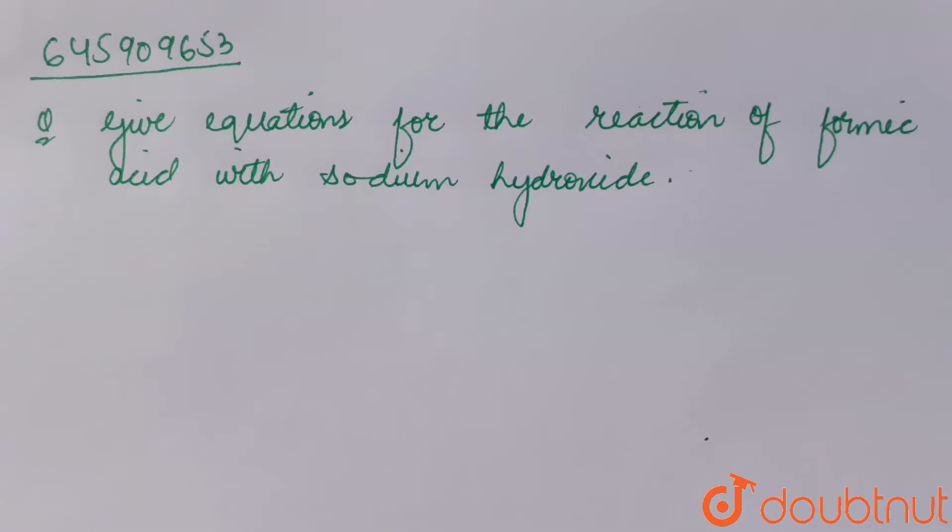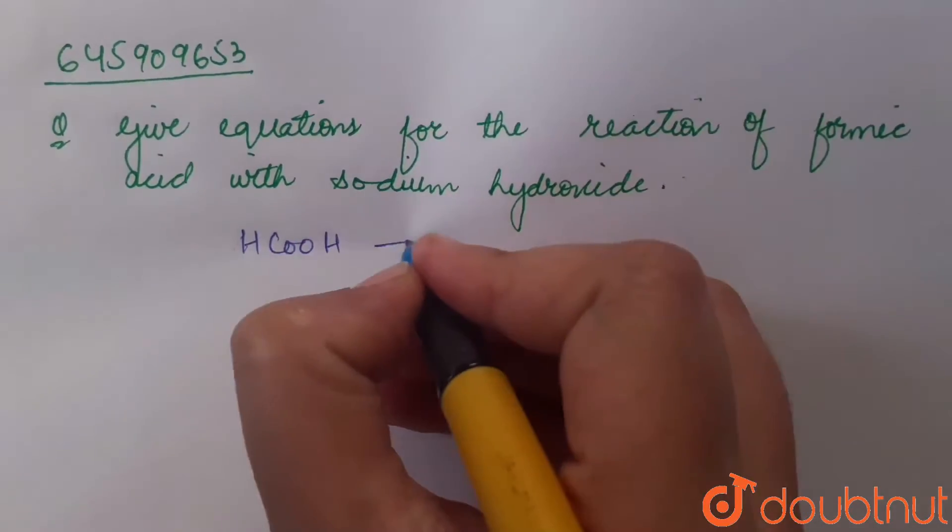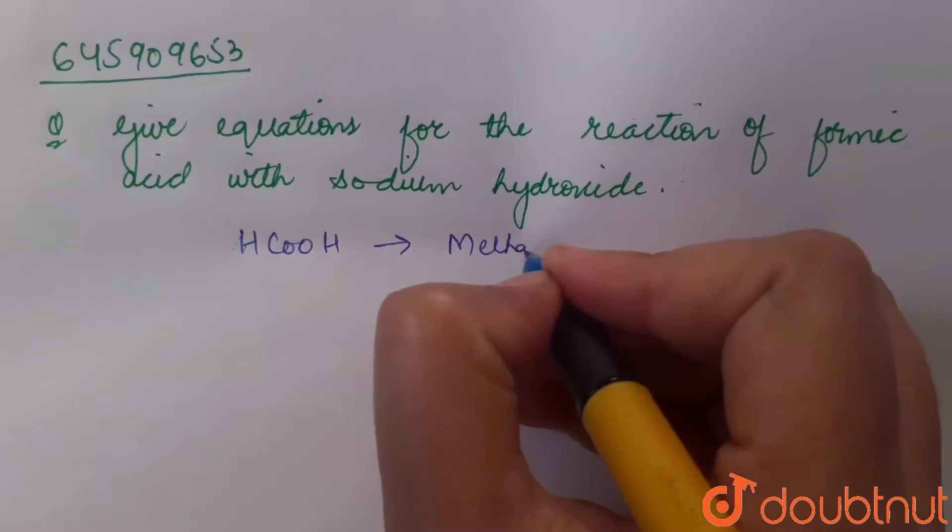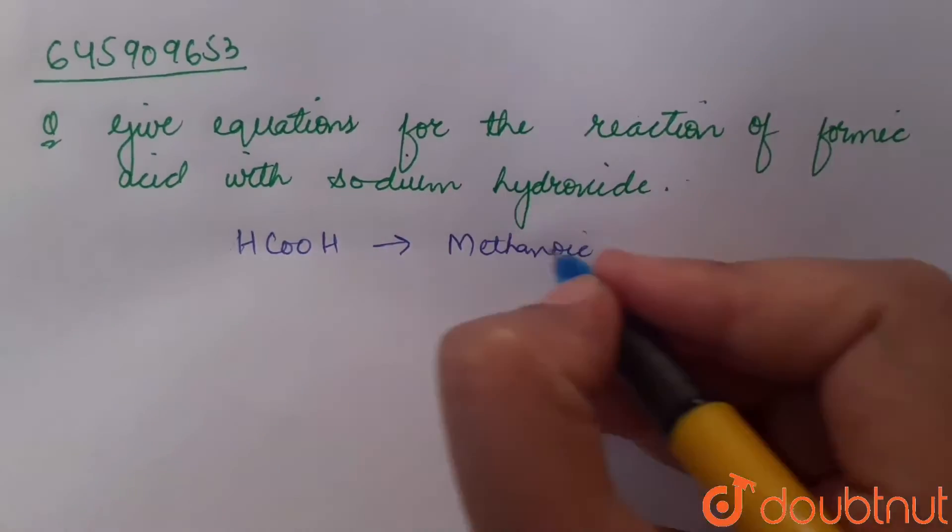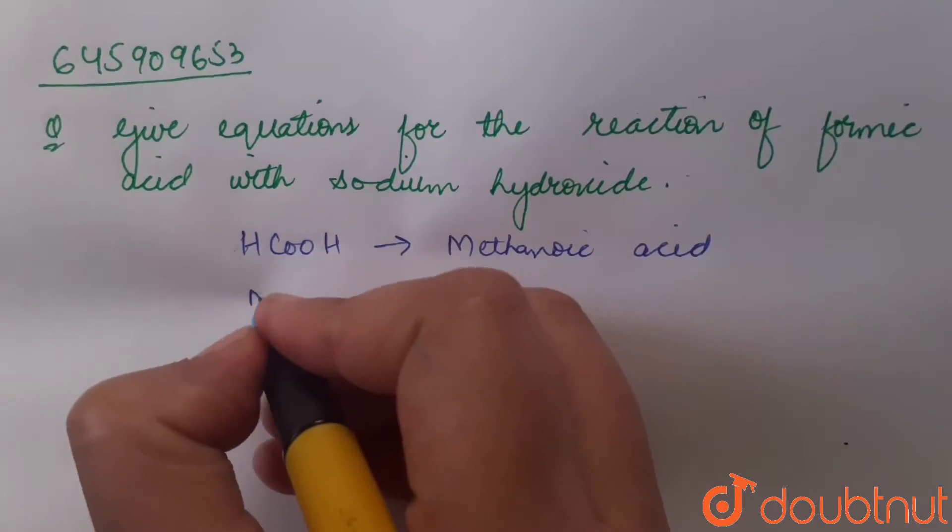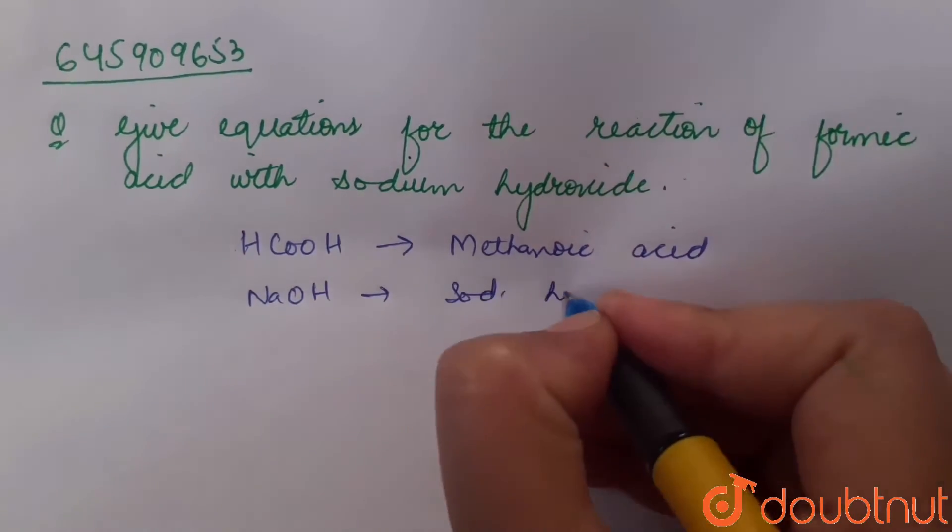Question says give equations for the reaction of formic acid with sodium hydroxide. Formic acid, that is HCOOH, the name of this is methanoic acid. And sodium hydroxide, it is NaOH, sodium hydroxide.